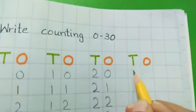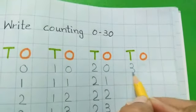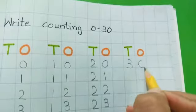After 29, 3 tens, 30. 3, 10, 30. 3, 10, 30.